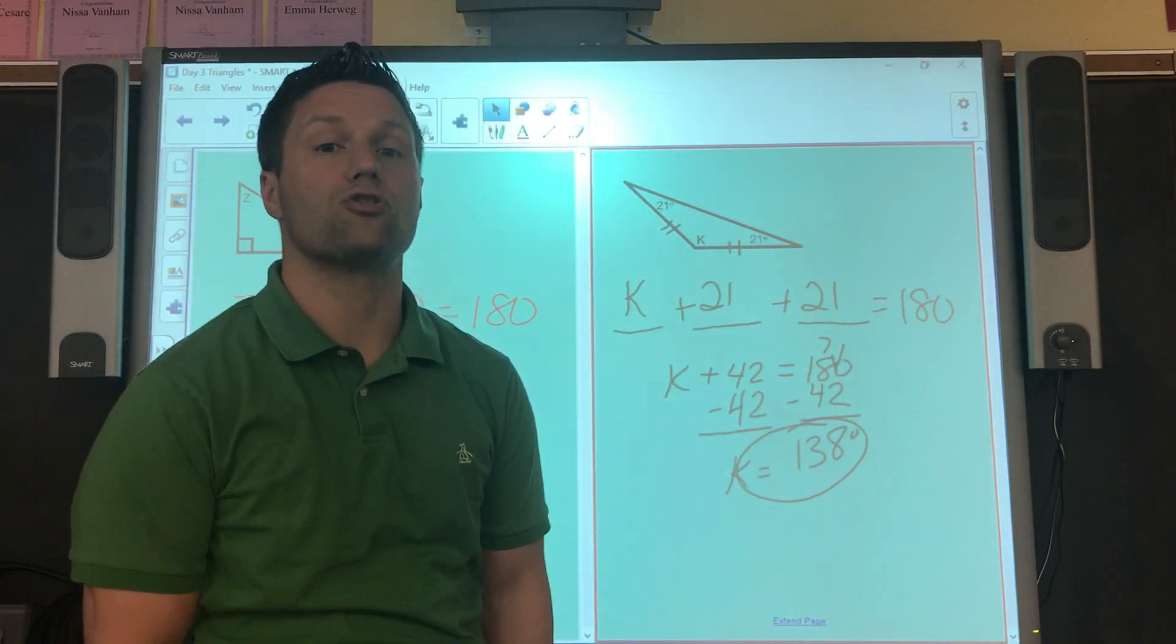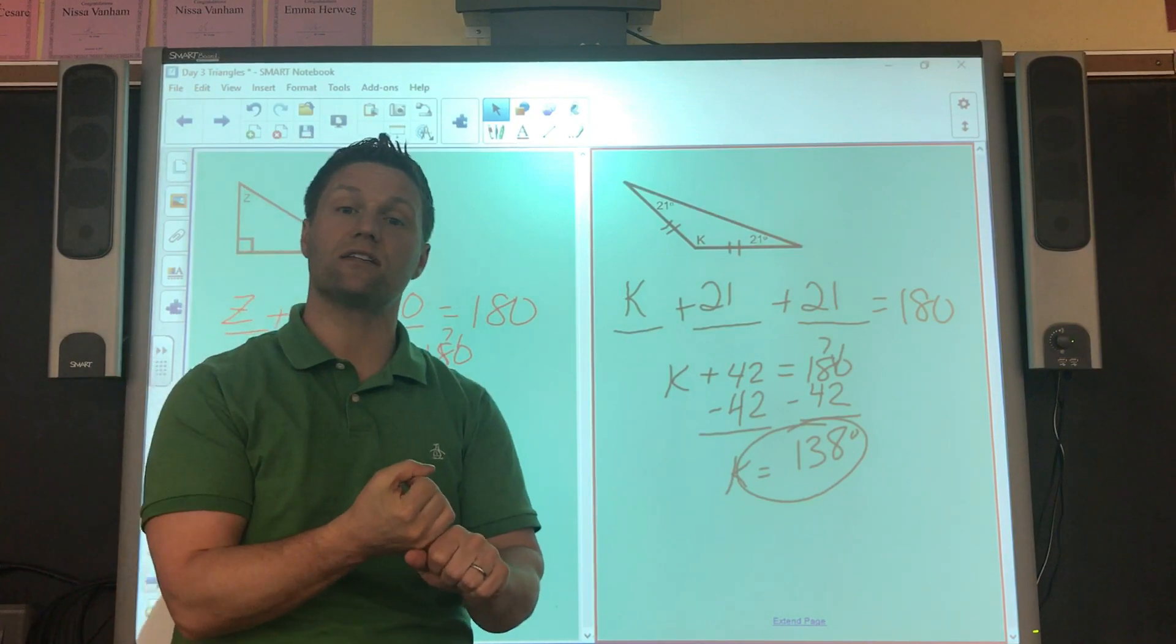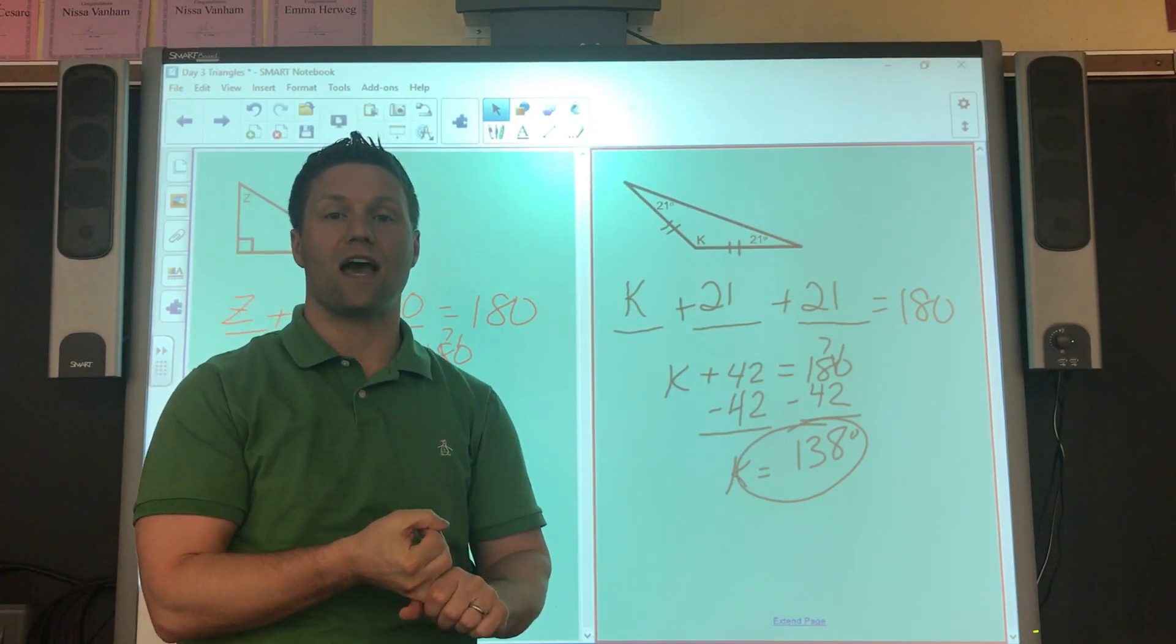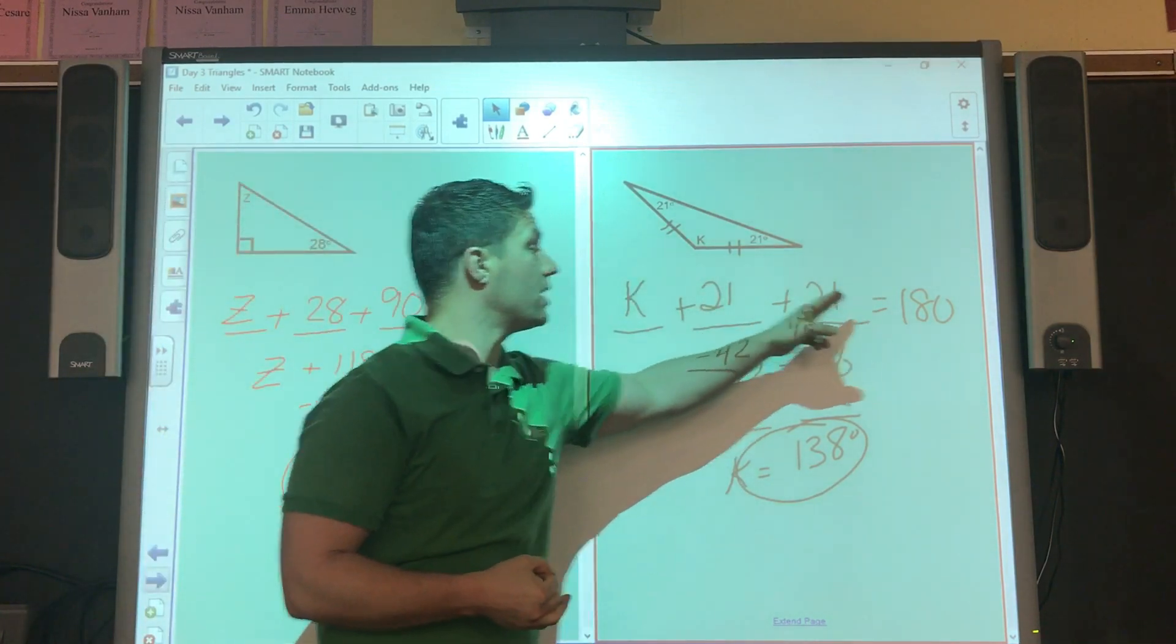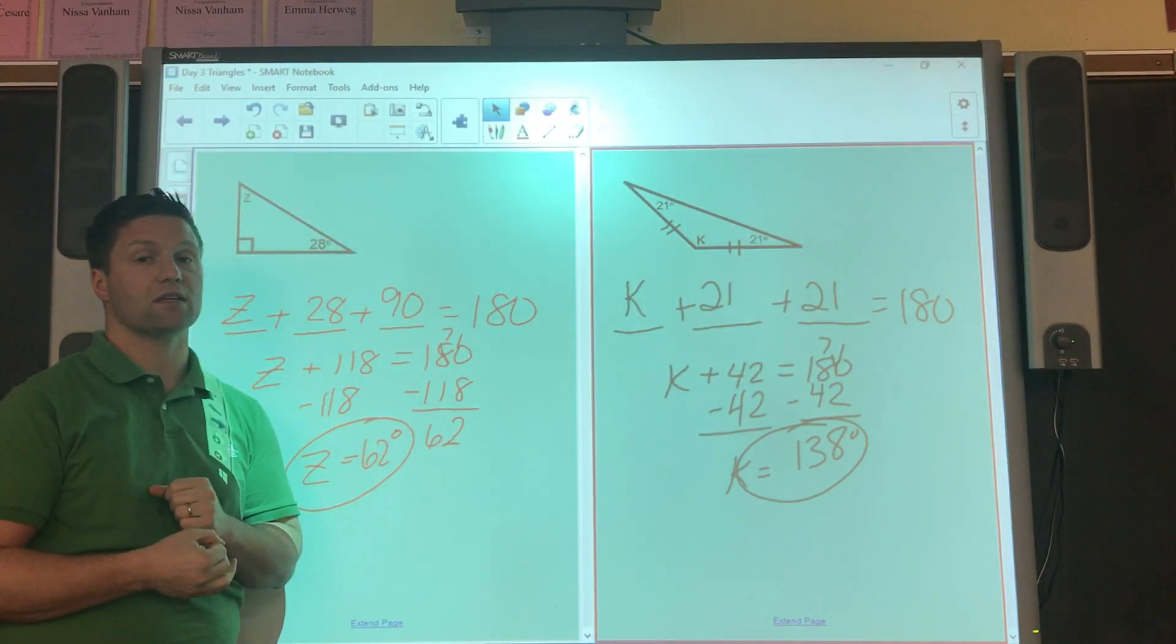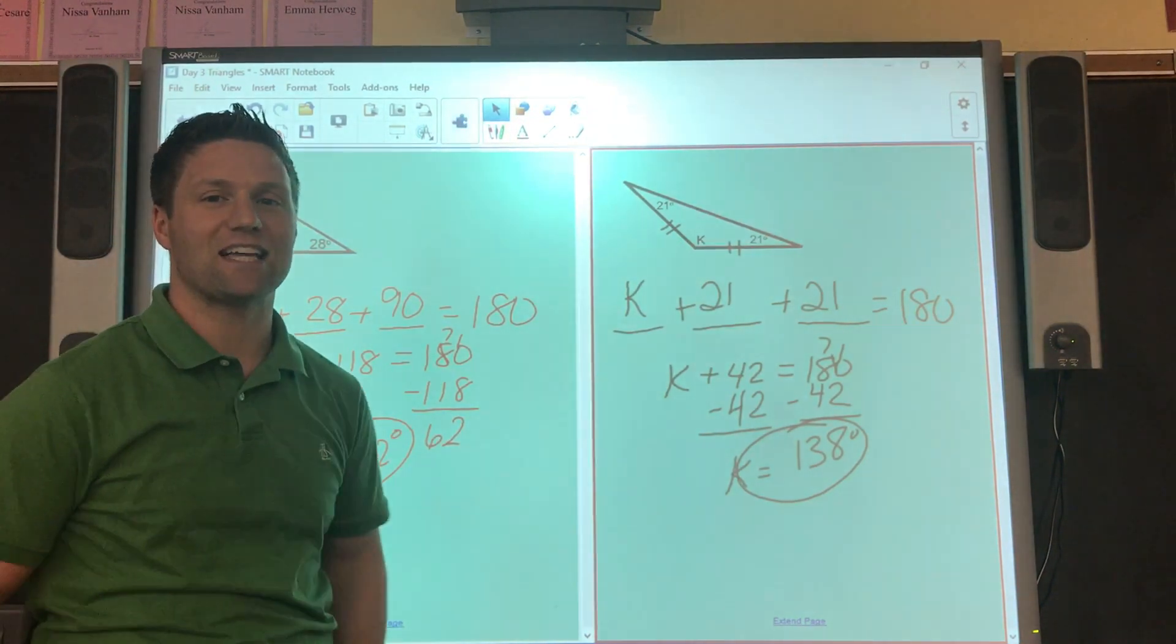That's a little bit about triangles today. How to classify them according to sides, according to their angles, and then a little bit about their angles, how they always equal 180. I can find the missing sign by using my algebra. That's it for today. Thanks again. Thanks for watching.